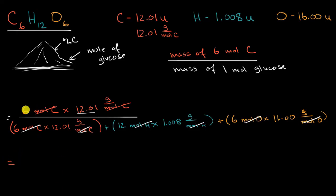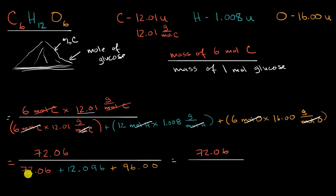So let's see. In the numerator, six times 12.01 is 72.06. And then in the denominator, I'm just going to do the pure calculation first, and then I'm going to worry about significant figures. So in the denominator, we have 72.06 plus, let's see, 12 times 1.008 is 12.096. And then we have plus six times 16 is 96.00. And this will be equal to 72, if we're just thinking about the pure calculation, before we think about significant figures, 72.06 divided by, let's see, if I add 72 to 12, I get 84 plus 96. I get 180.156.